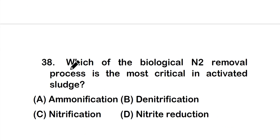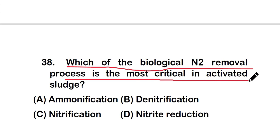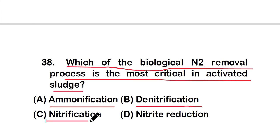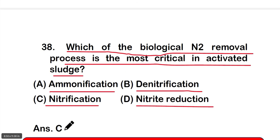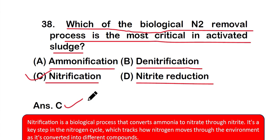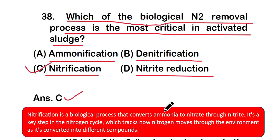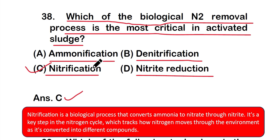Question number 38: Which of the biological nitrogen removal processes is the most critical in activated sludge? Options: A) ammonification, B) denitrification, C) nitrification, or D) nitrite reduction. The right answer is option C — nitrification. Nitrification is a biological process that converts ammonia to nitrate through nitrite. It is a key step in the nitrogen cycle and is the most critical process for removing nitrogen from activated sludge in wastewater treatment.